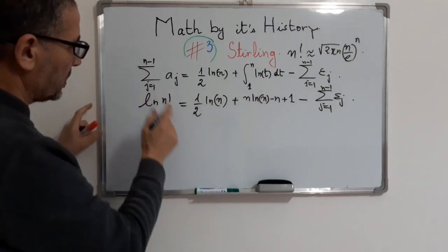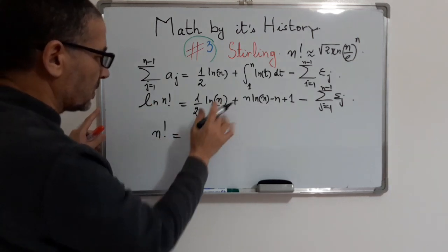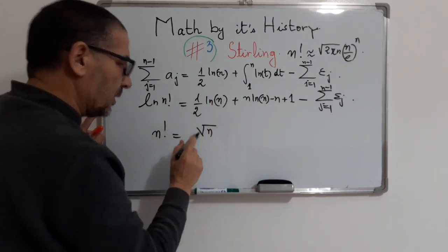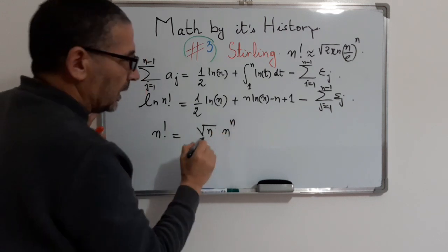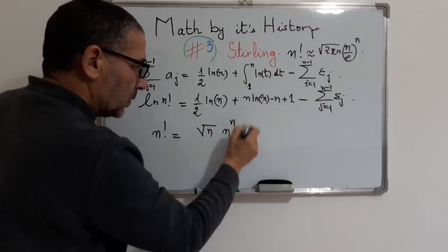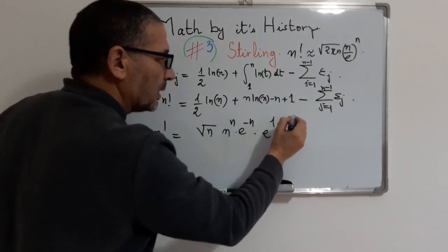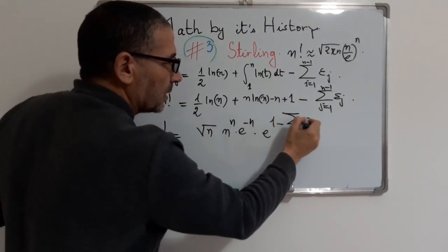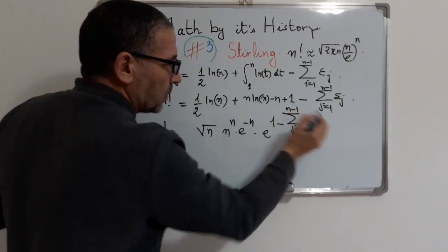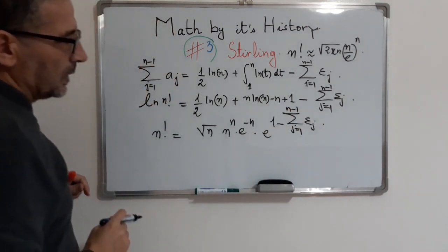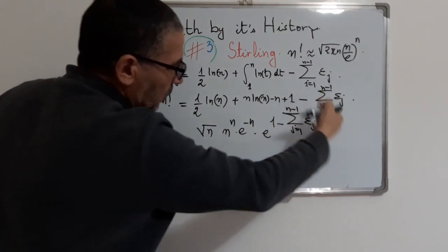Taking the exponential of both members of the equality, we obtain: n! equals sqrt(n) times n^n times e^(-n) times the exponential of the negative sum of epsilon_g from g=1 to n-1. We now convert this sum into a series.